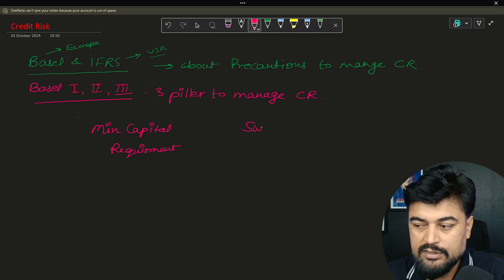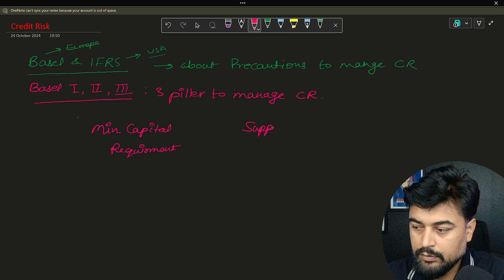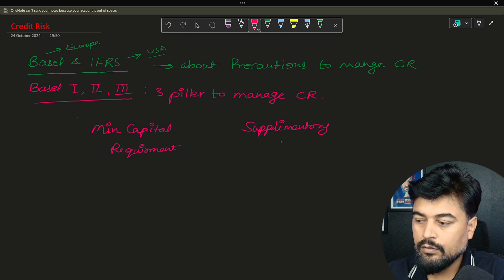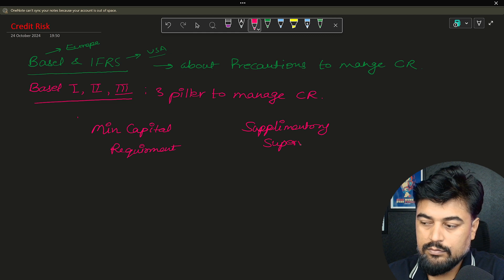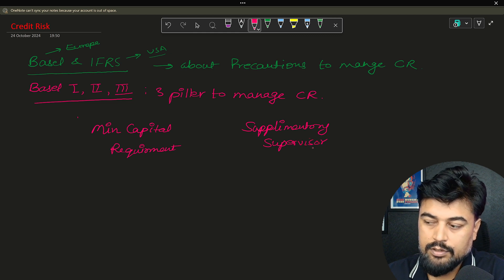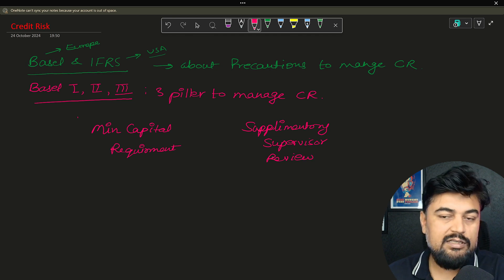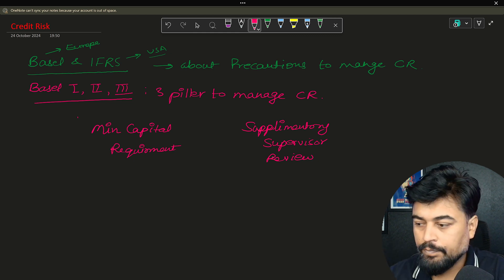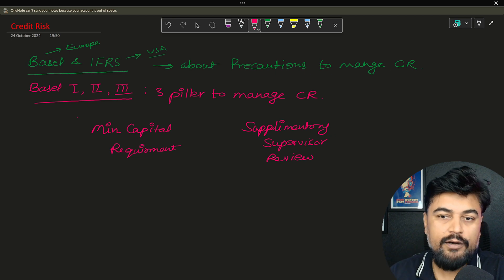This is pillar number one. Now pillar number two is supplementary supervisor review - that banks always have to maintain a supervisor review. This is the second pillar, and who that supervisor will be is also part of the guideline.